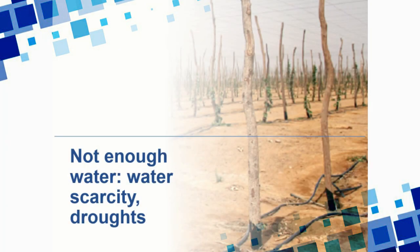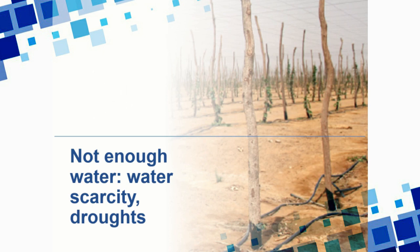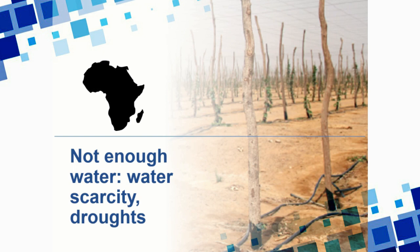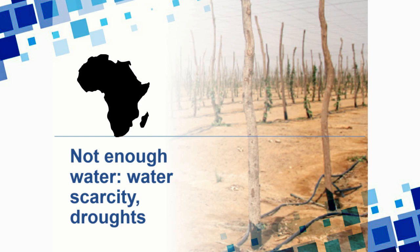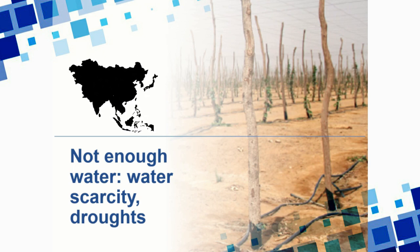If we look first at water scarcity — lack of water — it's crucial to appreciate the extent of this problem. Lack of access to clean drinking water and lack of sanitation are two of the major causes of human illness and mortality in the world. A lot of people die of cholera and other diseases related to water shortages. Africa has the highest annual deaths relating to water scarcity, especially in Nigeria and the Democratic Republic of the Congo, but numbers are also high in parts of Southeast Asia, especially India.